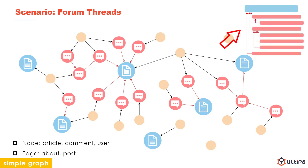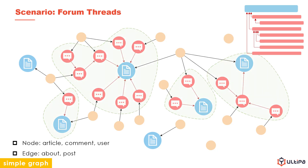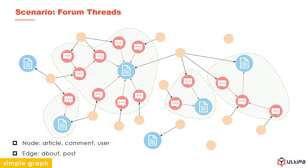A thread is an article with a group of comments directly connected through red edges. Intuitively, the bigger the cluster, the more popular the thread, as the size of the cluster corresponds to the number of comments in the thread.